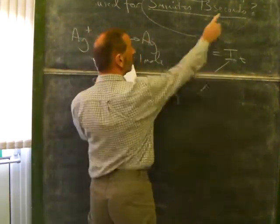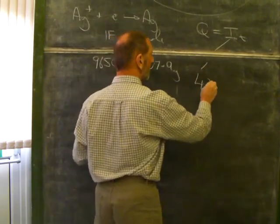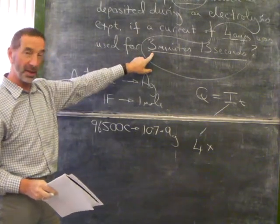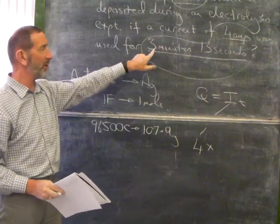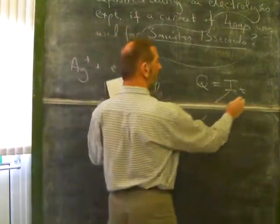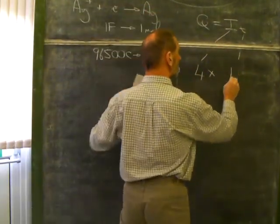The current we're told is 4 amps. And the time, here's the catch, the time has to be in seconds. So let's see, 3 minutes, 3 times 60, 180, plus 13, 193 seconds.